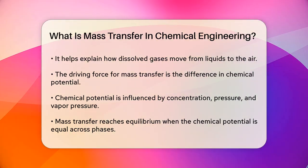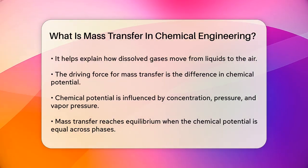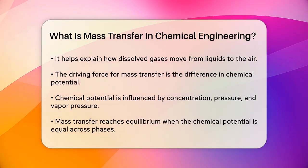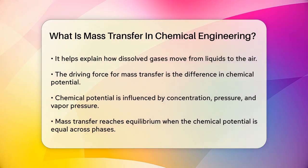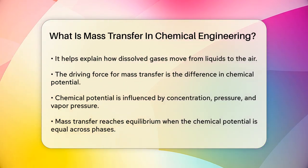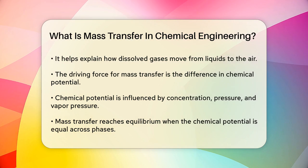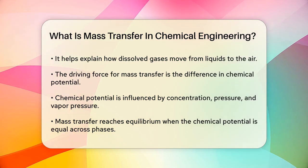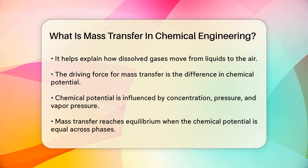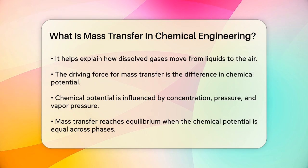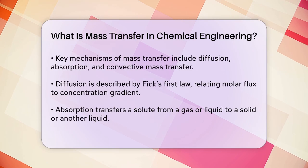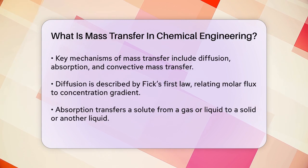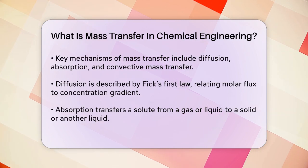Mass transfer can occur through several mechanisms, such as diffusion, absorption, and convective mass transfer. Diffusion is the process where molecules move from areas of high concentration to areas of low concentration. This is described by Fick's first law, which gives us the molar flux of a component based on its concentration gradient.